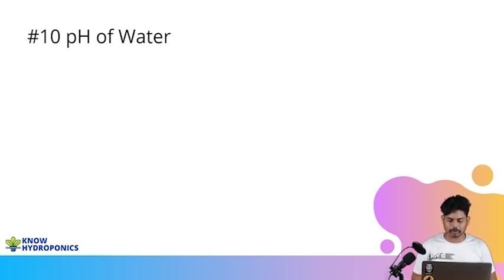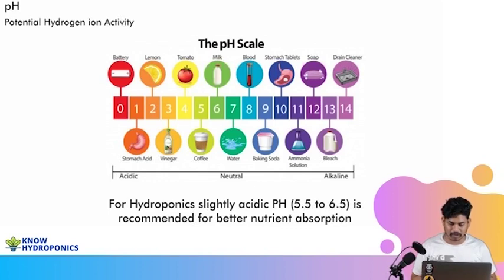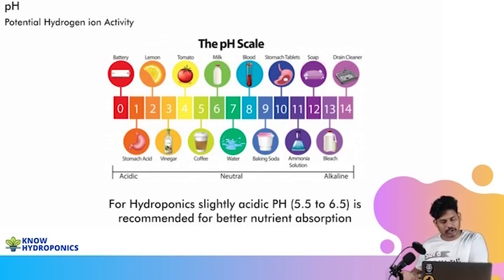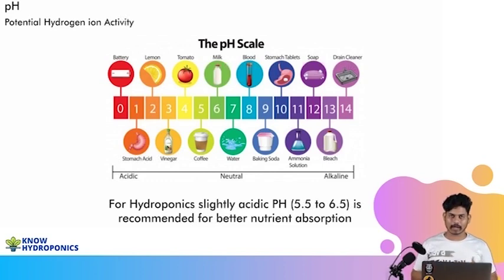Generally, the pH scale starts from zero and goes up to 14. When we talk about battery liquid or highly acidic waters like lemon, that's at the 0 or 1 scale. On the opposite end, when we talk about alkaline water — bleach, drain cleaner, or soap — that's on the scale of 13 and 14, meaning there is a lot of alkalinity in the water.